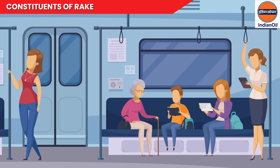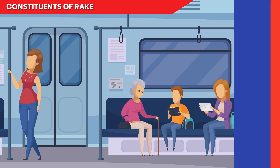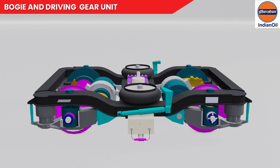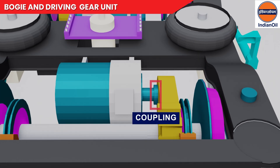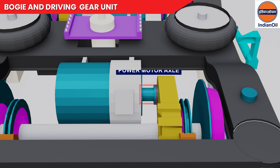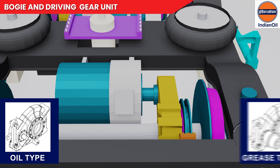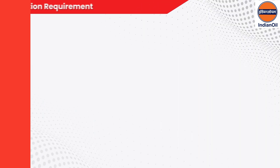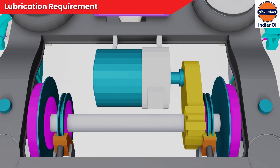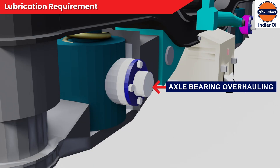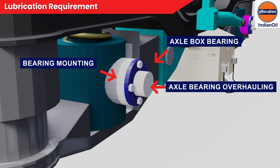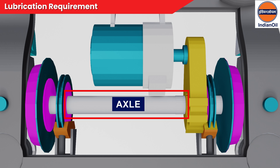Moving ahead to understand components and lubrication requirements of the rolling stock. Number one: bogey and driving gear unit. The bogey is a bolsterless type bogey. The traction motor and the driving gear are mechanically connected by a flexible gear coupling, through which torque is transmitted to the power motor axle. Half couplings are of two types: oil type and grease type. Lubricants applied include: oil used in drive gear, oil for half coupling between motor and drive gear, grease for half coupling, axle bearing overhauling, axle box bearing, and bearing mounting for axle during axle bearing mounting and wheel mounting.